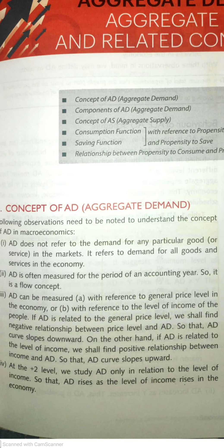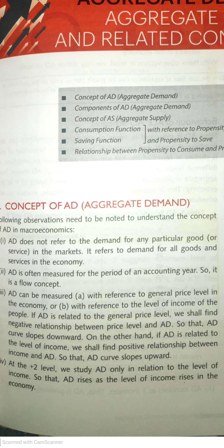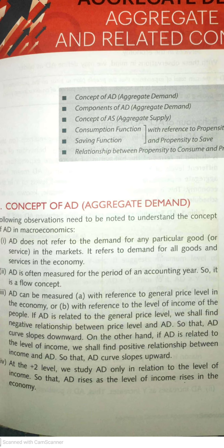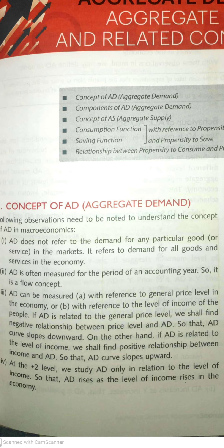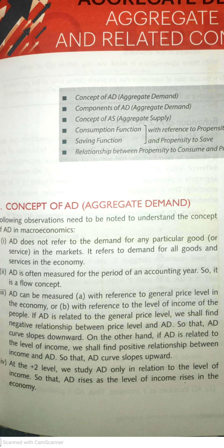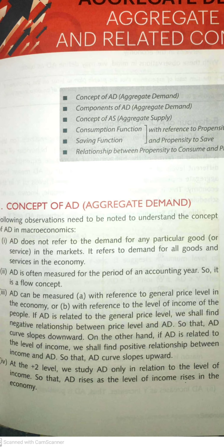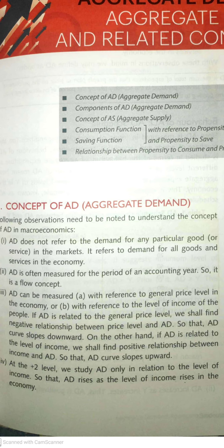At the plus two level, in 12th standard, we are going to study aggregate demand only in relation to the level of income, because AD rises with the level of income. As per our syllabus, we will only focus on aggregate demand as per the income level. The AD curve will be upward sloping because we are studying it in relation to the income of the people — as income increases, overall demand also grows.